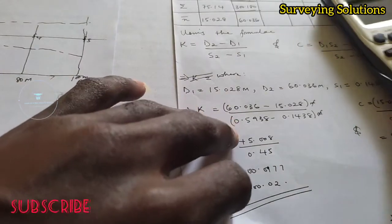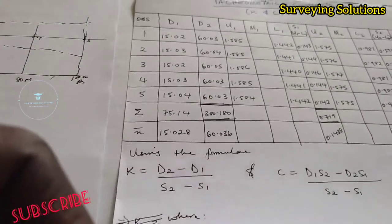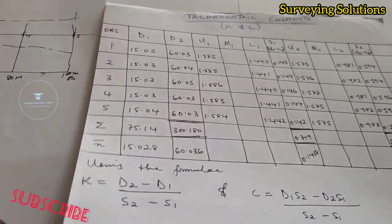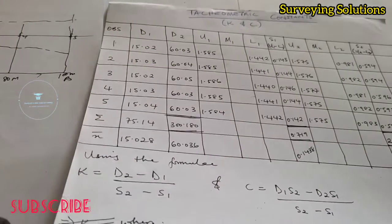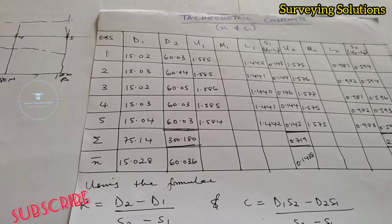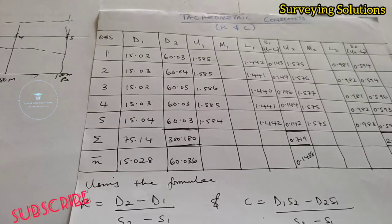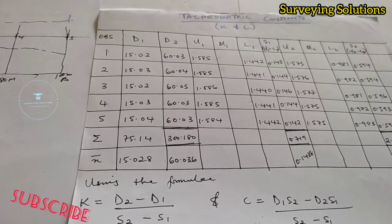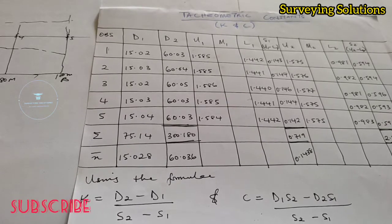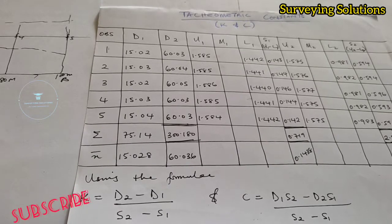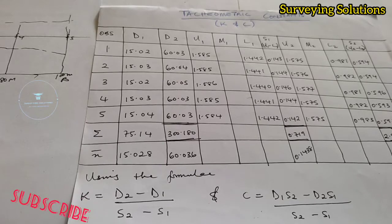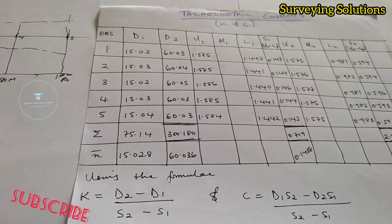For today's data, we are using two distances: D1 and D2. In this case we have 15 meters and 60 meters. This means staff positions were placed at the 15-meter mark and the 60-meter mark, with observations made at each position multiple times.